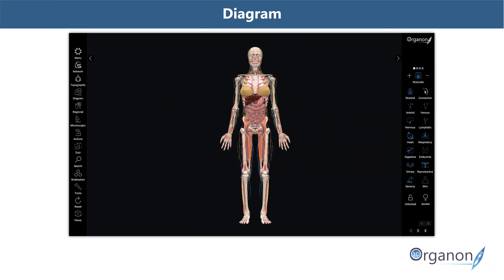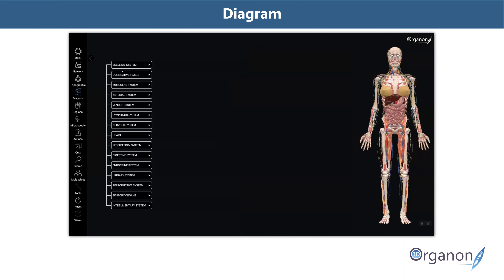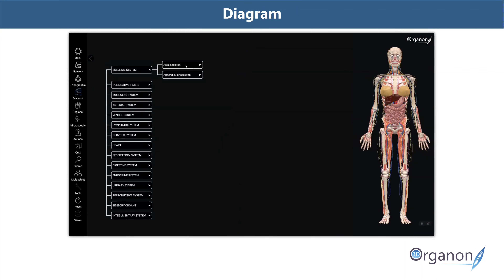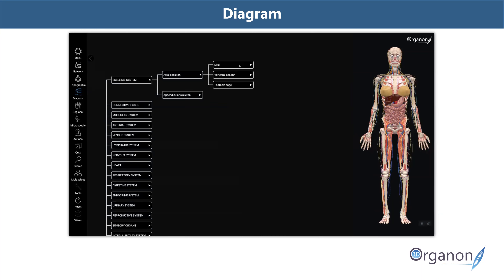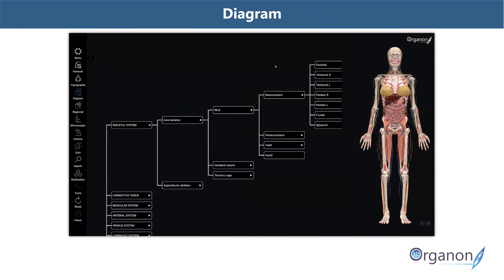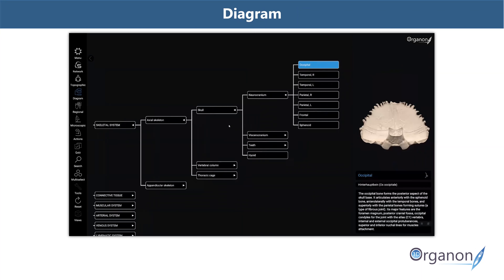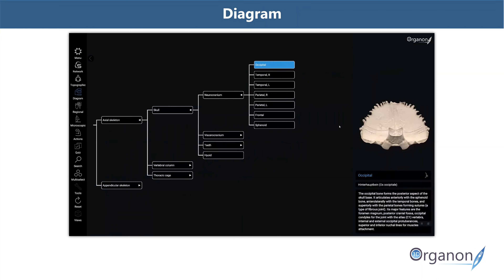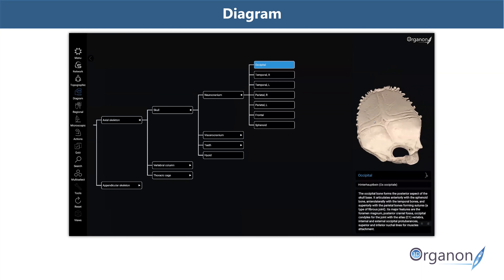The diagram tool illustrates a full mapping of all body systems and their structure classifications. At the full expansion of an anatomical structure, the entire breadcrumb navigation trail is shown together with the 3D model and its definition. There are literally over 10,000 such structures that you can identify with your diagram.